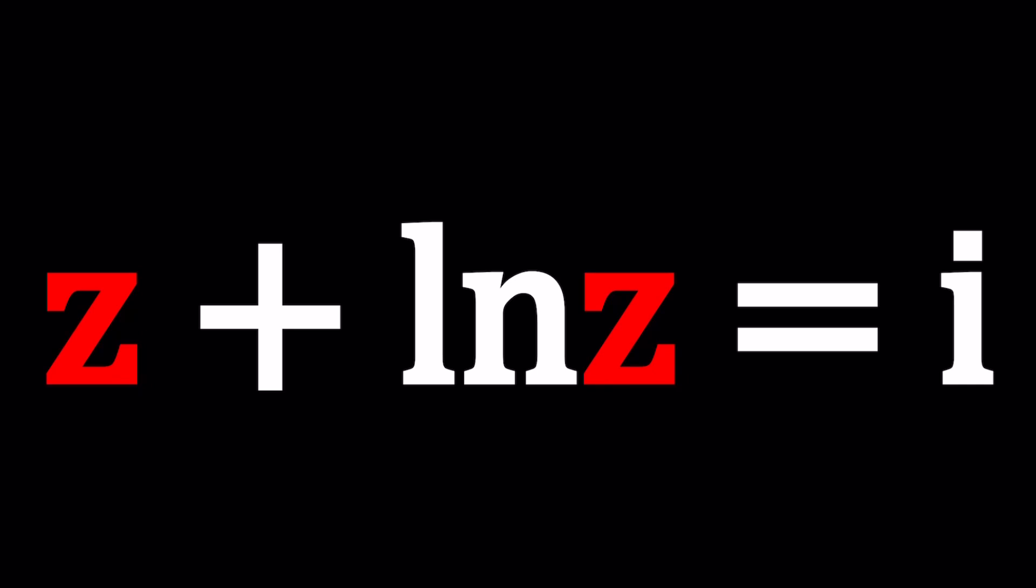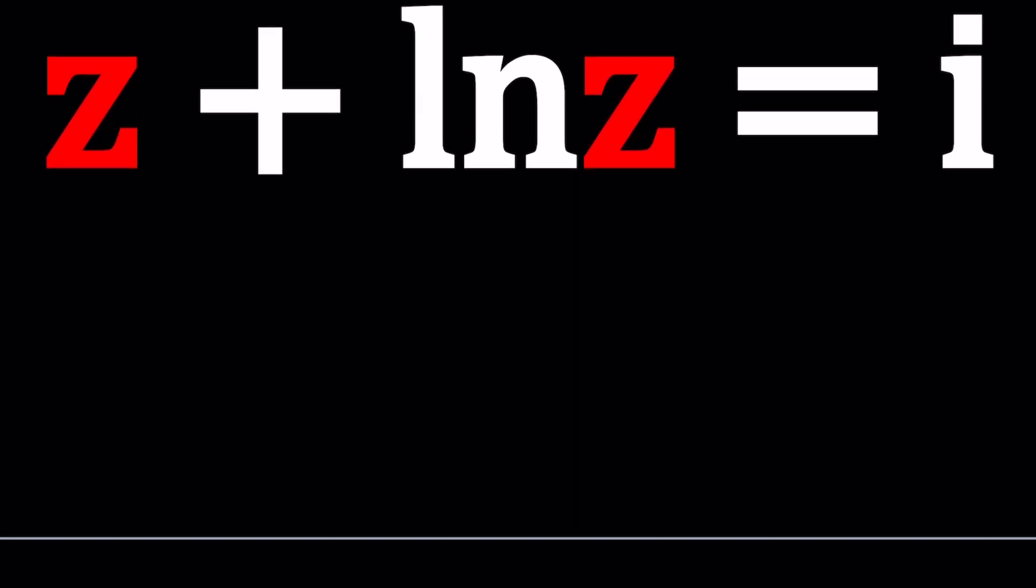Let's see how we can tackle this problem and these kinds of problems. So whenever you see Z and ln Z together you should almost always think about a special function which is called Lambert's W function. I don't know if you heard about it but Lambert's W function works as follows. Let's go ahead and do a quick intro.